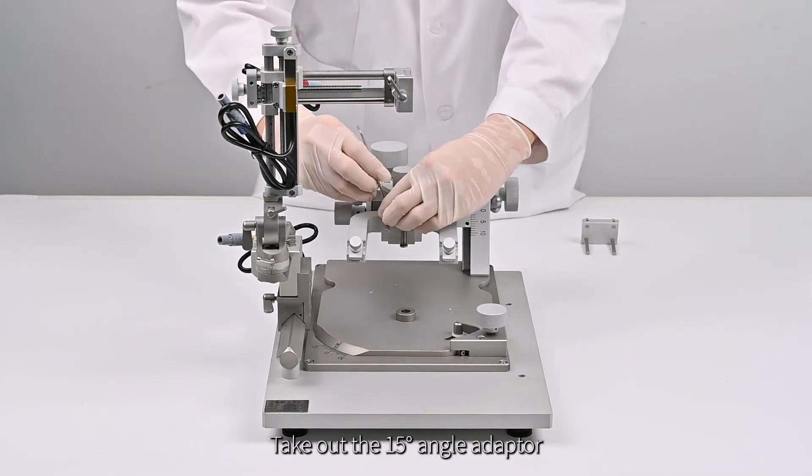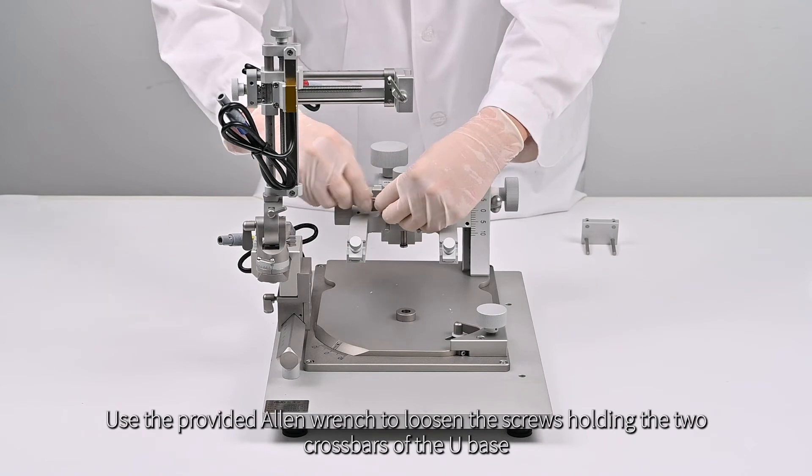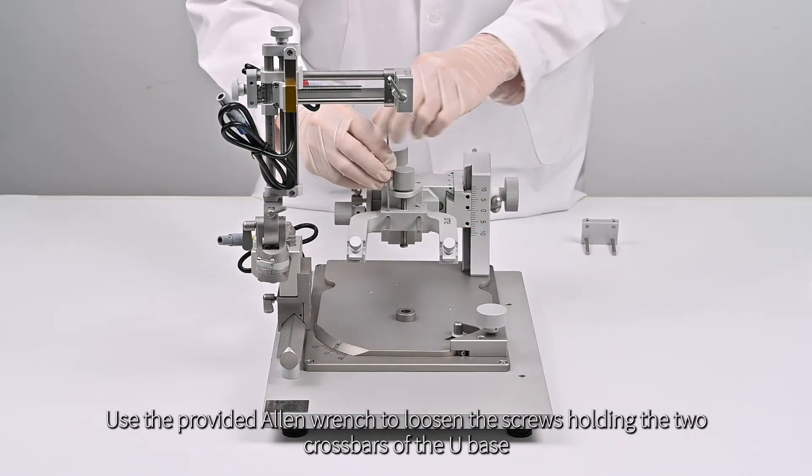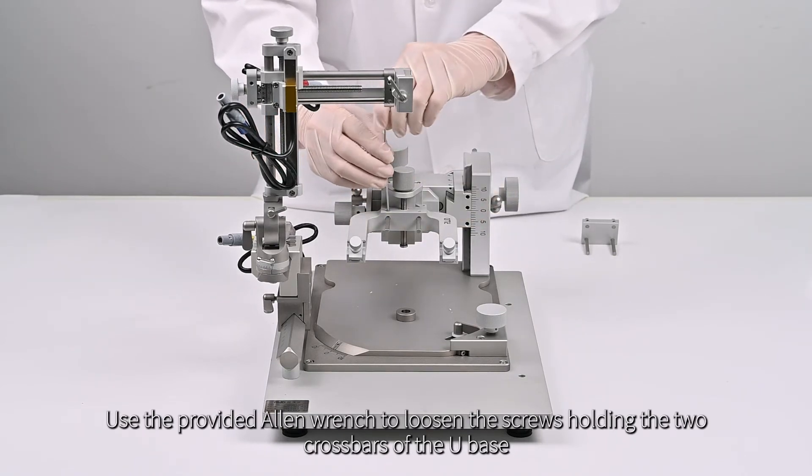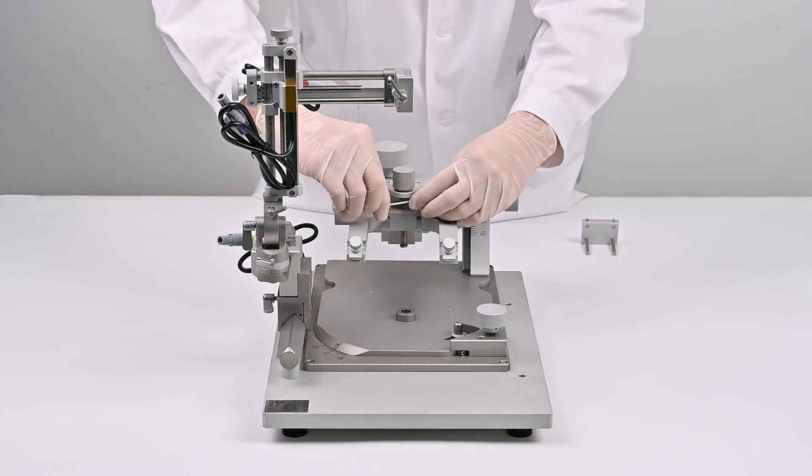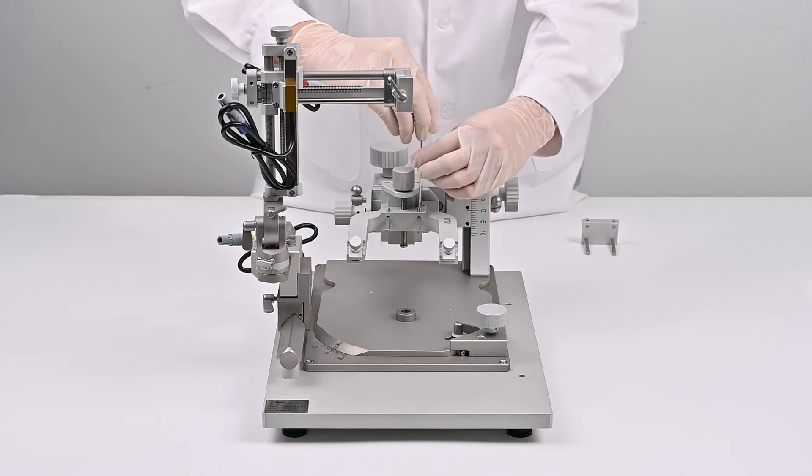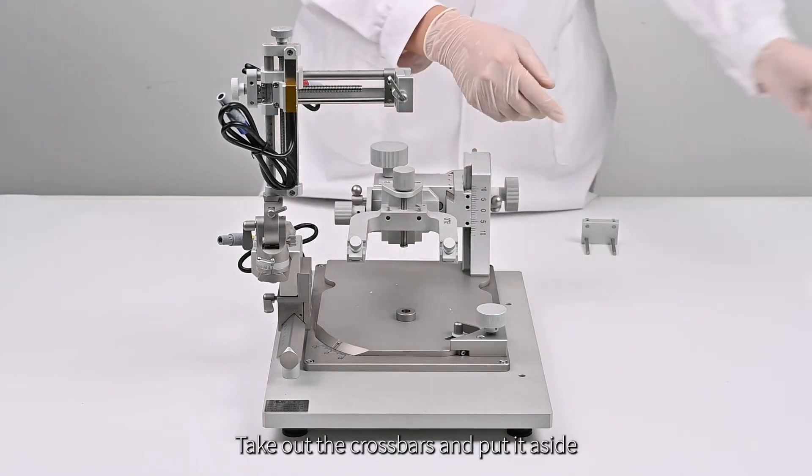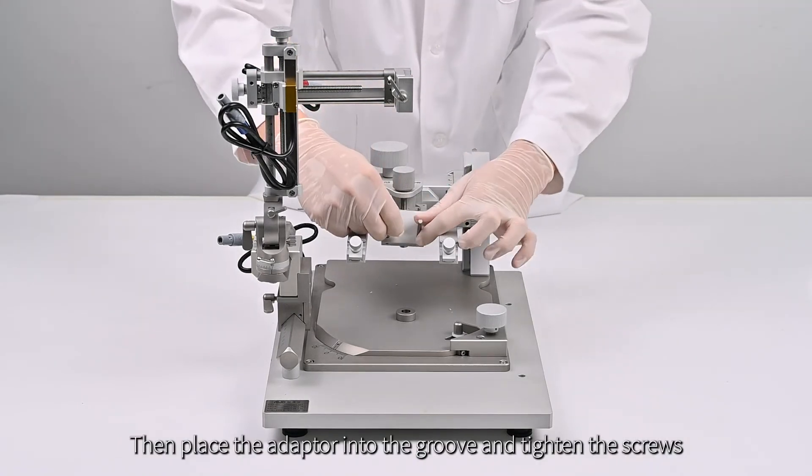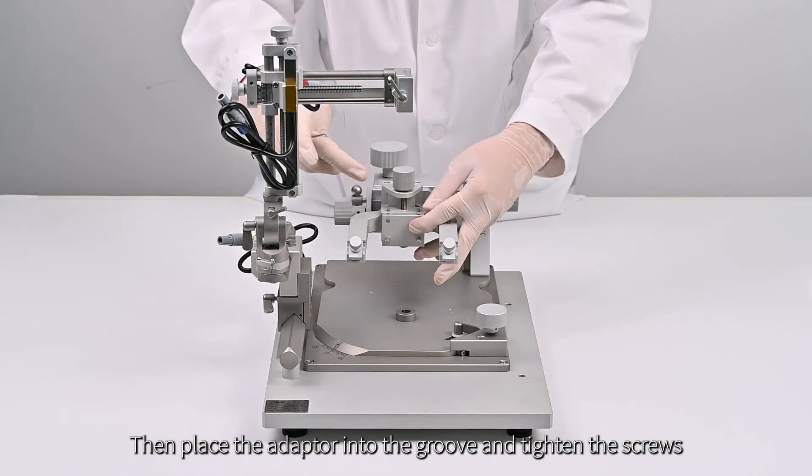Take out the 15-degree angle adapter. Use the provided Allen wrench to loosen the screws holding the two crossbars of the U-base. Take out the crossbars, and put it aside. Then place the adapter into the groove, and tighten the screws.